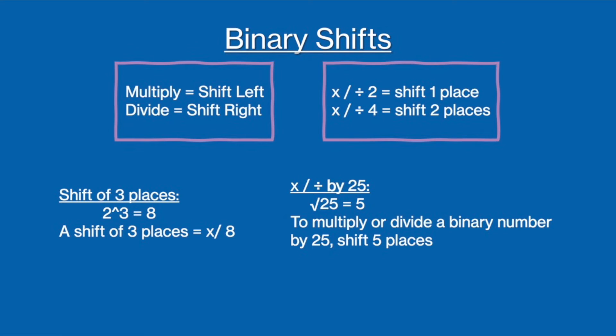So shifting a binary value three places would mean multiplying or dividing by two to the power of three, or eight. So if you were to multiply or divide a binary number by 25, then to find out how many times you shift the value, you simply square root the number. So the square root of 25 is 5, meaning that multiplying or dividing a binary number by 25 means that you're going to shift the number five places. This may be a little hard to wrap your head around at first, but once you try it a few more times, it becomes easier to get the hang of.